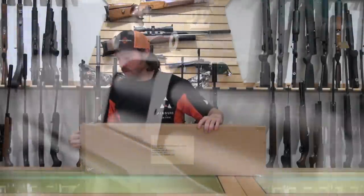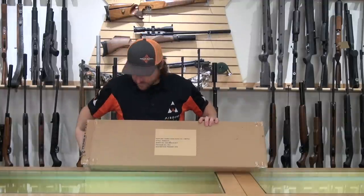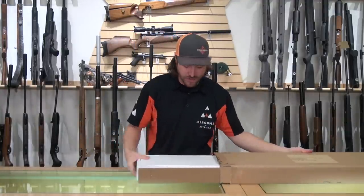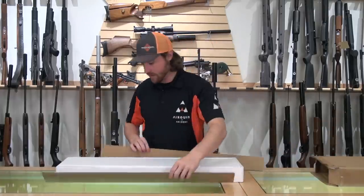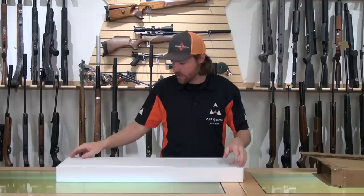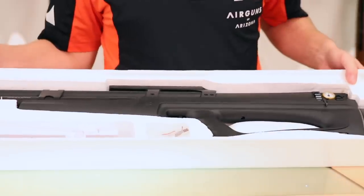So here we have the Hoobin K1 in its box that it comes from the factory. We are today going to be looking at the .22 caliber. We'll go ahead and get this main box out of the way. You have a nice piece of styrofoam here with the cutout. And there's the rifle, very compact.